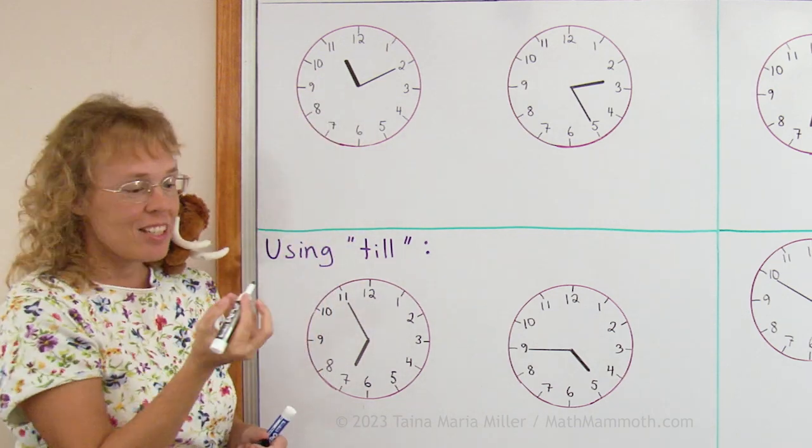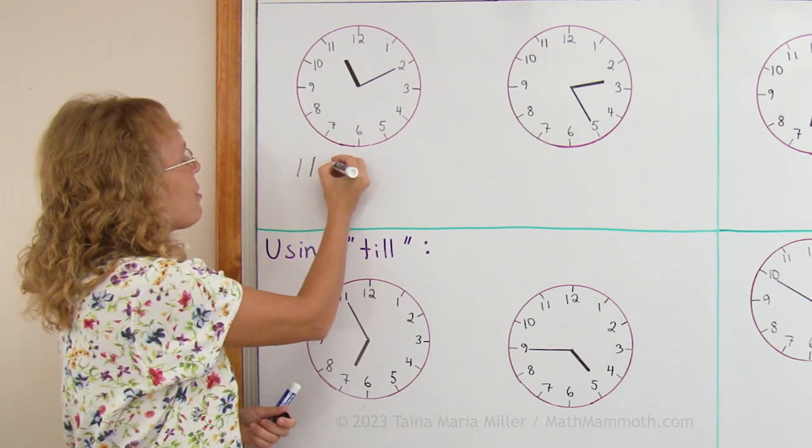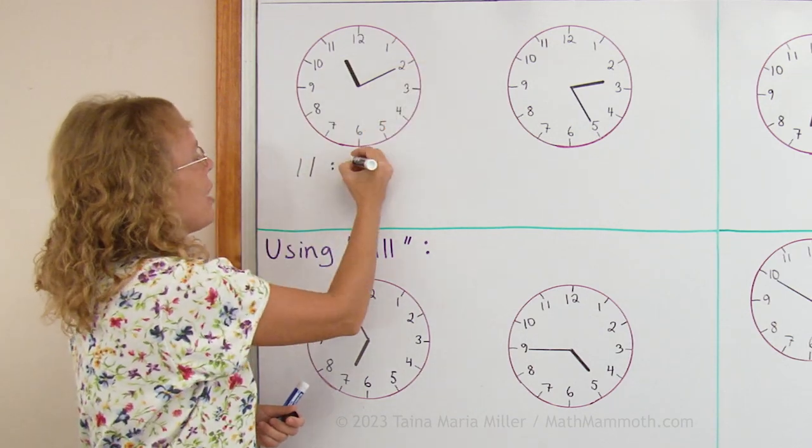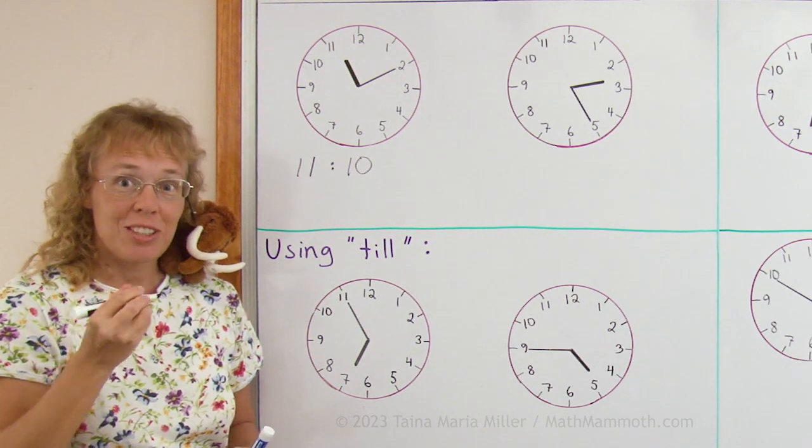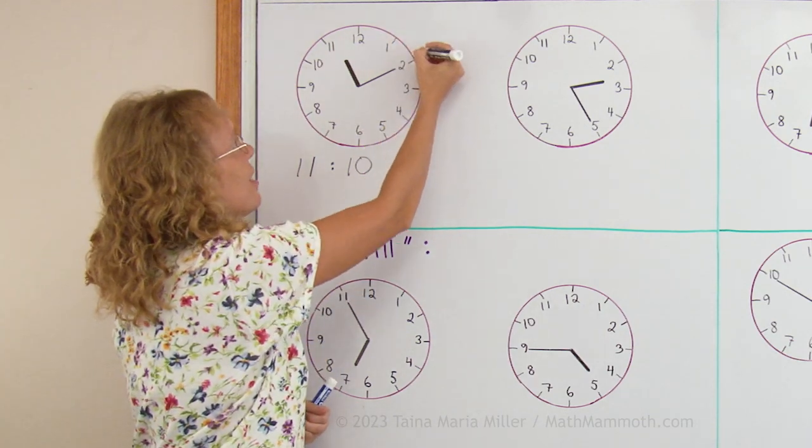The hour hand over here is at 11, so the time is 11 hours, right? And then 10 minutes. Remember, for the minute hand we need to count by 5's, okay, 5 and 10.